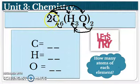So if we look at just the carbon, the carbon has the two coefficient and the six subscript. So we're going to take two times six. That will give us 12 carbon.